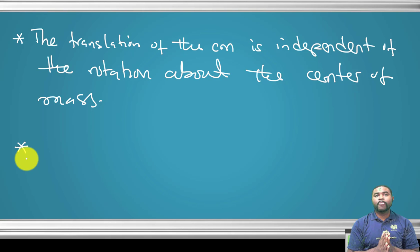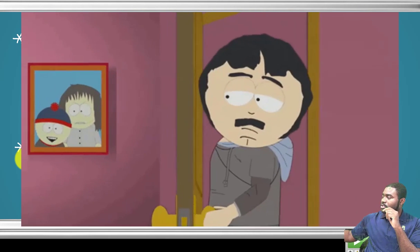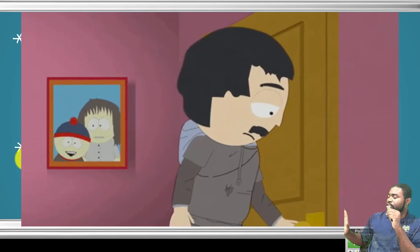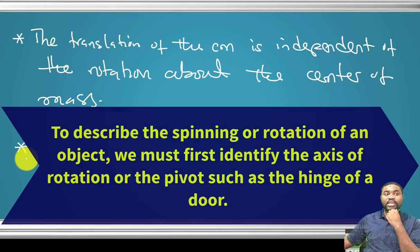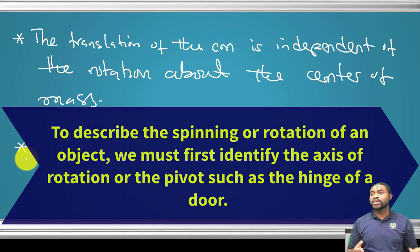To describe the rotation of an object, what must we first specify? Akish, can you go to the door and perform a simple experiment — just open the door and gently close it. When Akish exerts a force on the door, it rotates about the hinge. So the hinge is our axis of rotation, or the pivot. For us to describe the rotational motion of an object, we must first specify the axis of rotation, or the pivot.